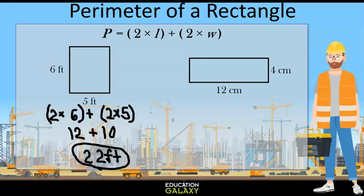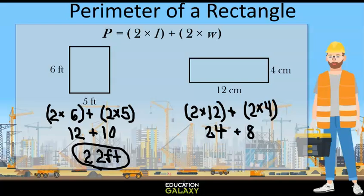Now let's look at our second rectangle. The length is 12 centimeters and the width is 4 centimeters. If we use the formula we get 2 times 12 plus 2 times 4. That gives us 24 plus 8 which is 32 so our answer is 32 centimeters.